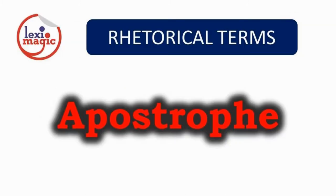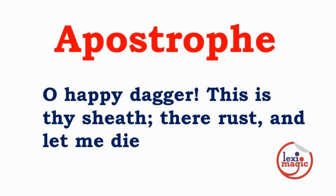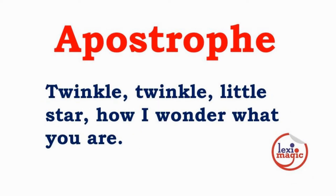Apostrophe is a figure of speech where the speaker detaches from reality and addresses something imaginary. Shakespeare effectively used apostrophe in all his plays. Here's one from Romeo and Juliet: 'Oh happy dagger, this is thy sheath. They are rust and let me die.' Another example: 'Twinkle twinkle little star, how I wonder what you are.'